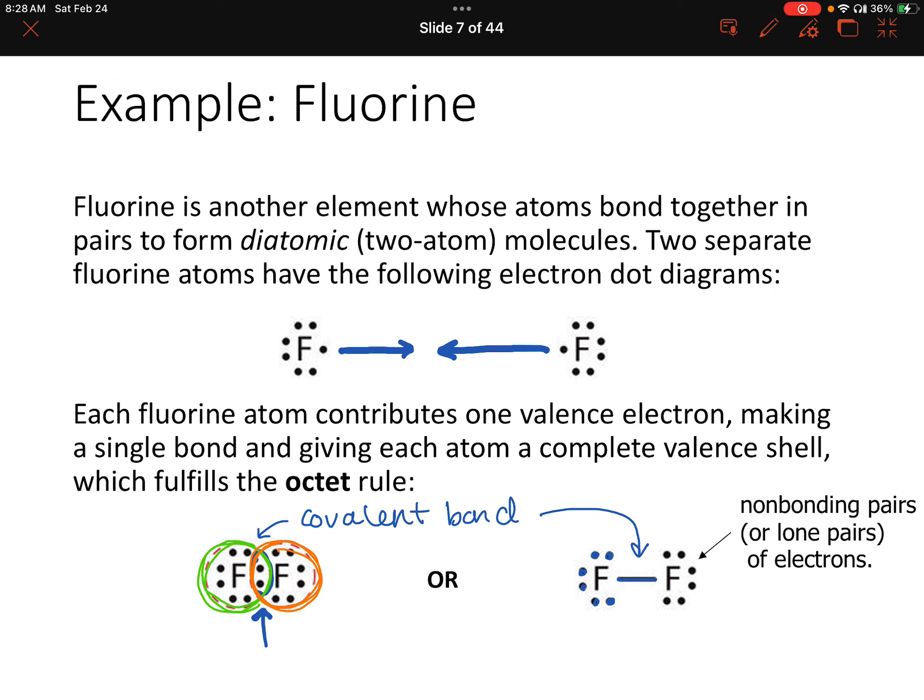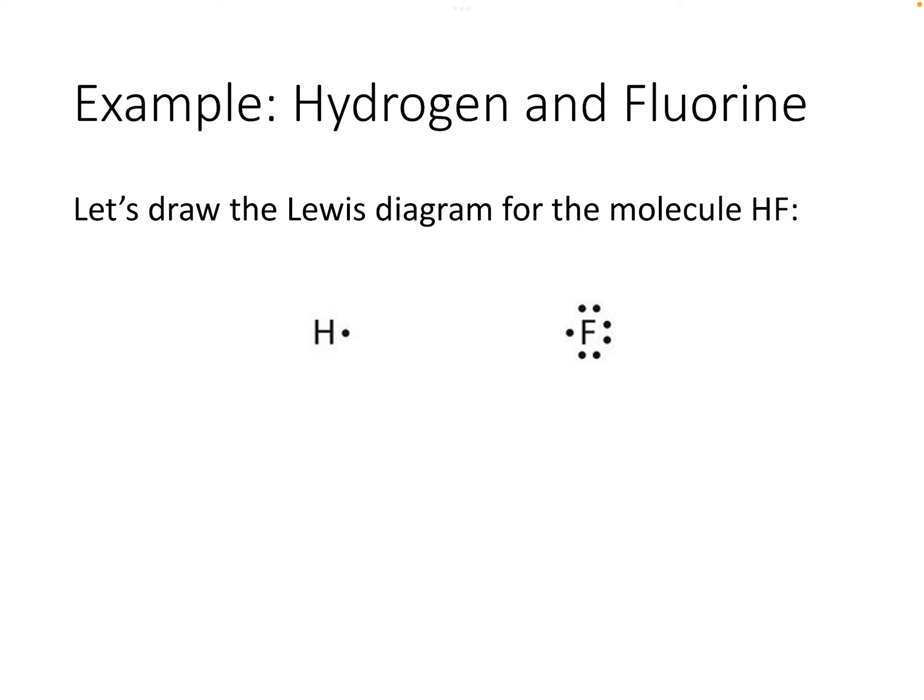So far we've talked about diatomic molecules where each atom is the same. But what if we mixed it up and had a molecule between hydrogen and fluorine? Let's draw the Lewis diagram for HF, which is hydrofluoric acid. If you've watched Breaking Bad, you might have heard of it — there was an episode where they used it to dispose of evidence. Hydrofluoric acid is technically a weak acid, but it can penetrate skin easily because it's very small, so you need to wear a hazmat suit and multiple pairs of gloves.